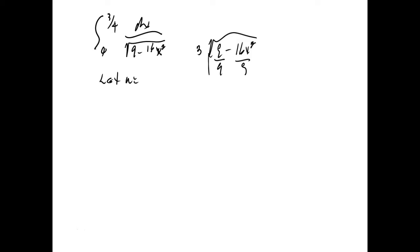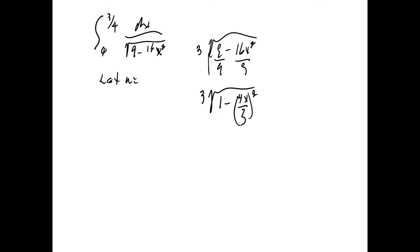It doesn't look fair, but it's right. So this will be 3 times the square root of 1 minus (4x/3) squared. Now we'll do our substitution: let u = 4x/3. Then u² = 16x²/9, and that's exactly what we have there.